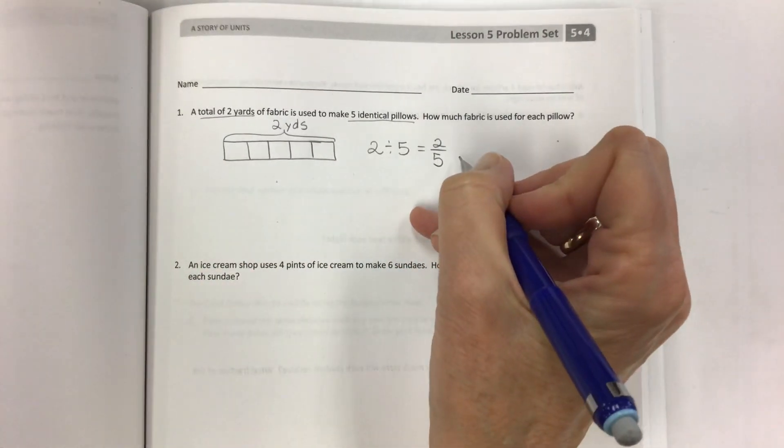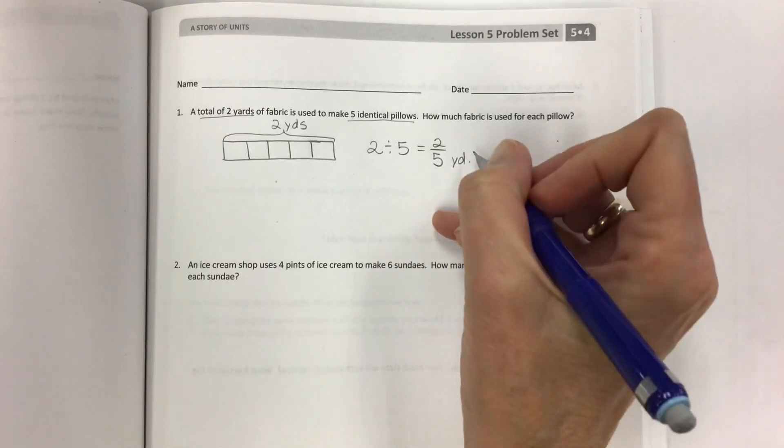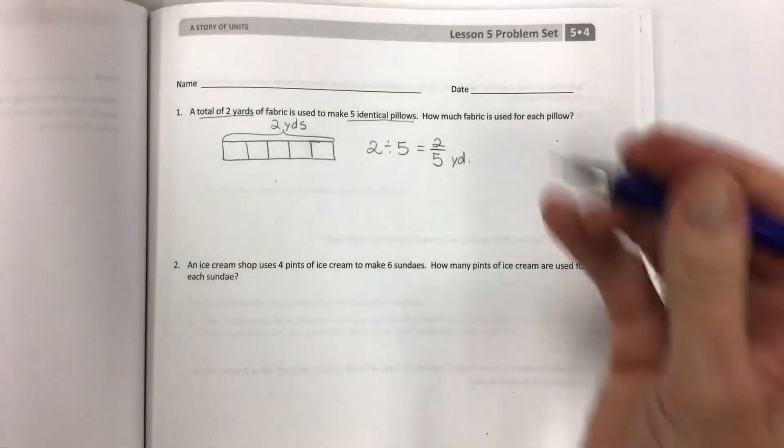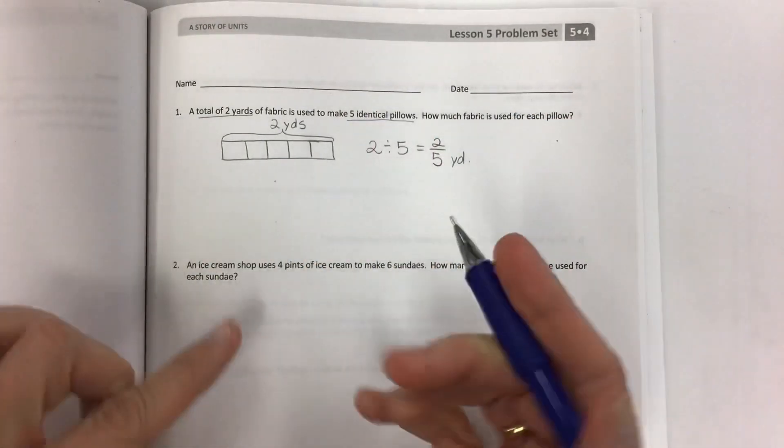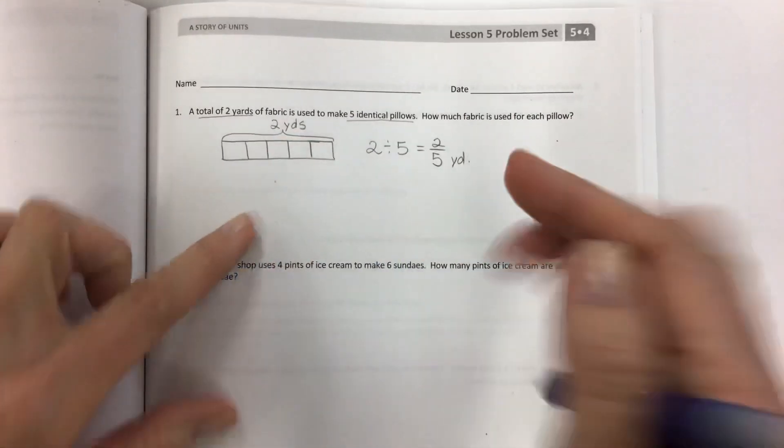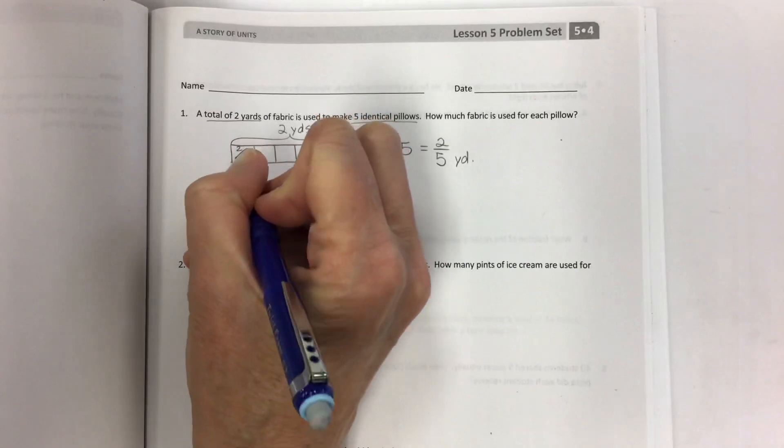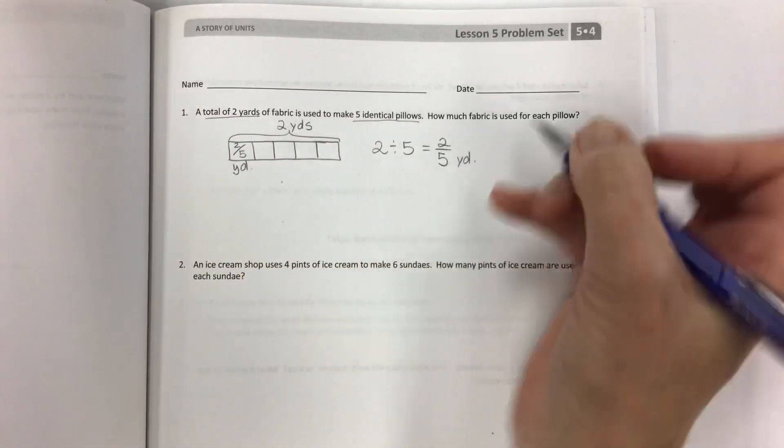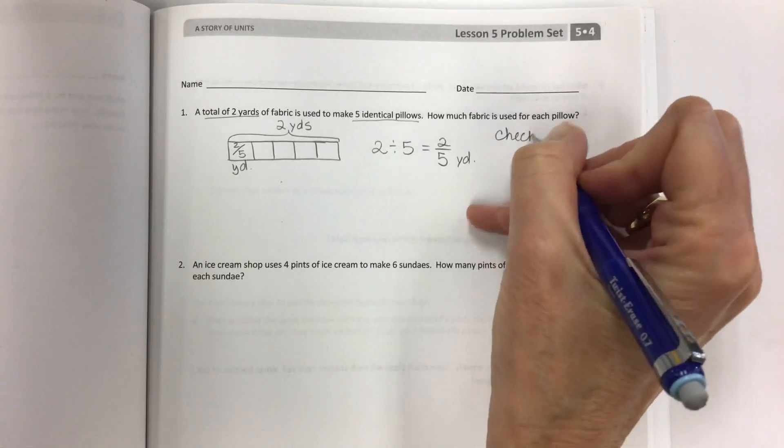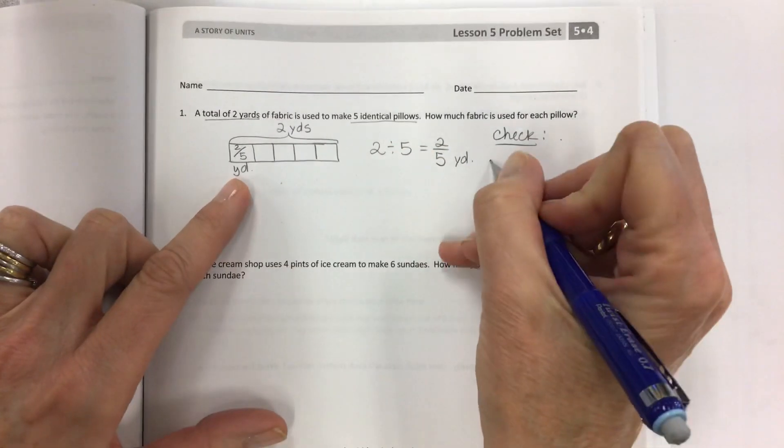This is the amount of yardage per pillow. So what else do we have to do? We're going to show both ways to get into it and then to get out of it so you can check your work. So if each one is two-fifths of a yard, then how do you check it? Well it's two-fifths five times.